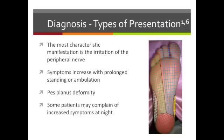Subjective information from the patient will be important because the most important complaint will be irritation along the distribution of the tibial nerve, which is depicted here in red, blue, and green. The red portion is the calcaneal branch; the blue and green are the medial and lateral plantar branches. Your patient could present with irritation of a single branch or any combination of the three branches, depending on where the nerve is being compromised. They may also complain of symptom amplification with prolonged standing or walking and increased pain at night.